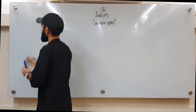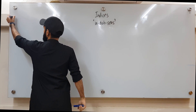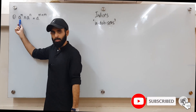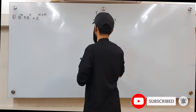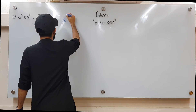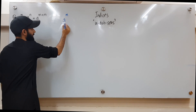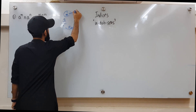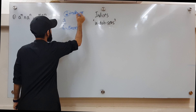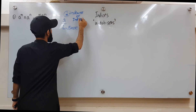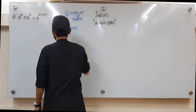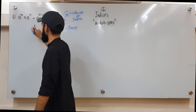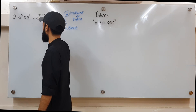Let's get started without any time to waste. Rule number one: when same bases are multiplied — now, let's figure out what 'base' and 'index' mean. In 'a to the power m', 'a' is our base and 'm' is our power. Power is also called index; index is singular and indices is plural.